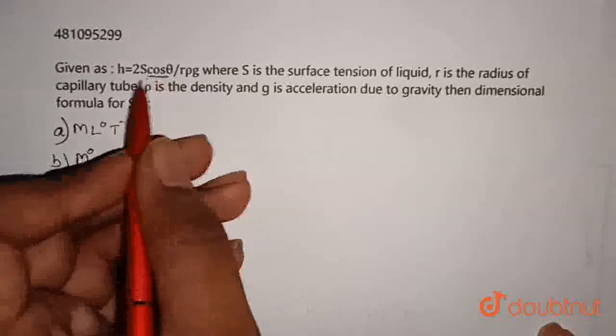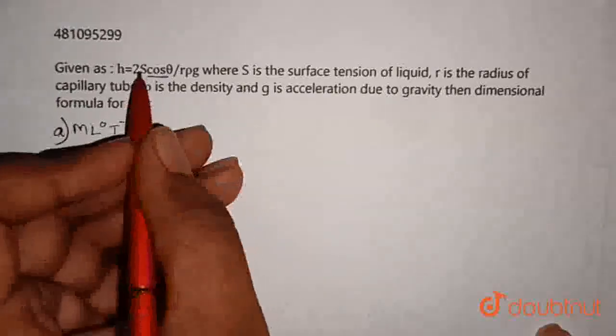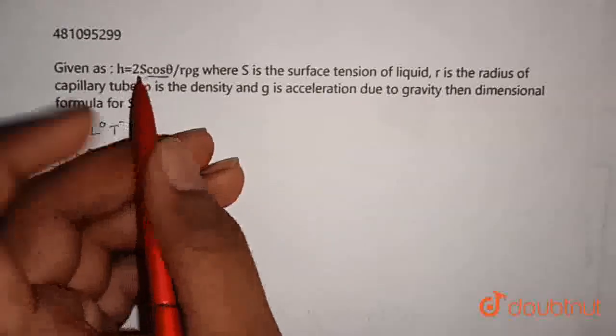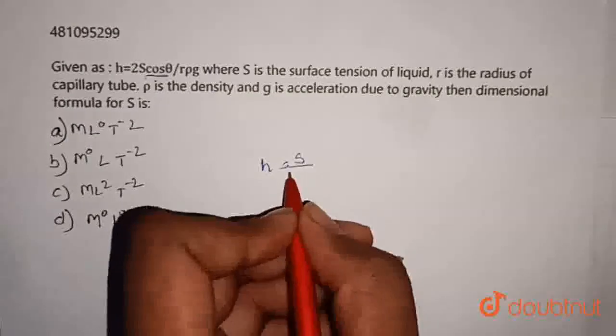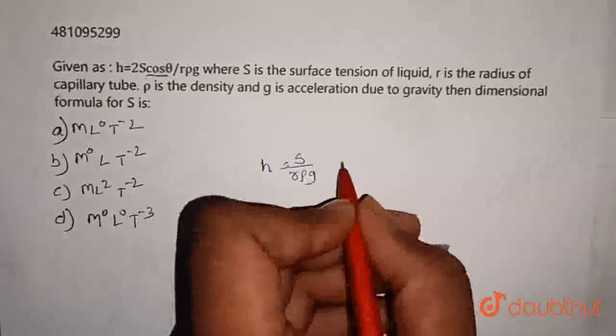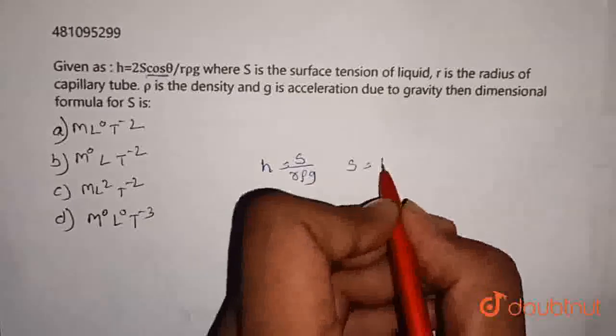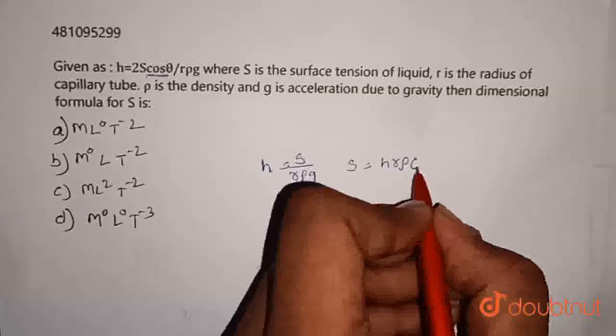As cos theta has no dimensions, hence we can neglect it. And 2 has no dimensions, hence we can neglect it. So h is equal to s by r rho g. We can say s is equal to h r rho g.